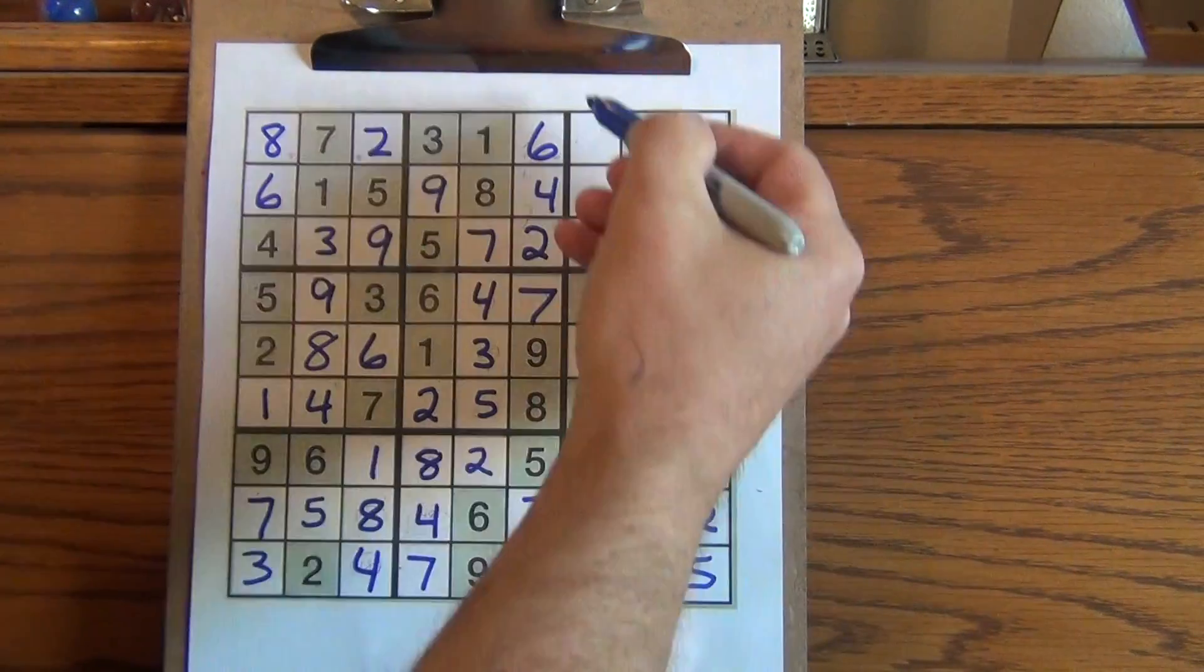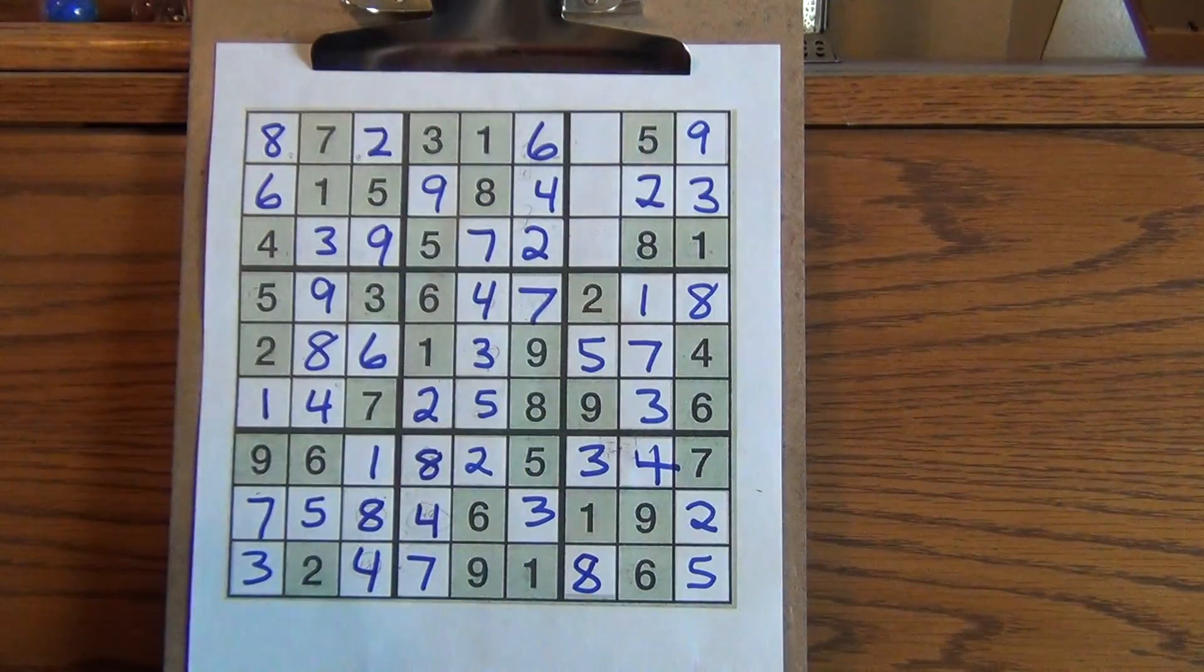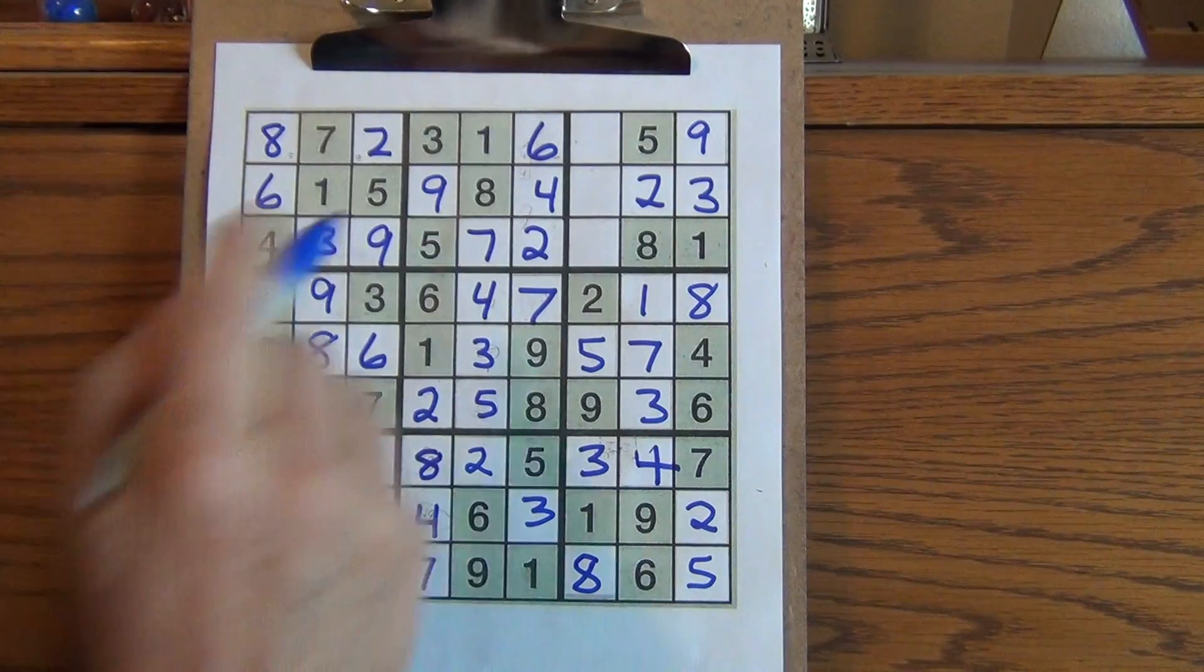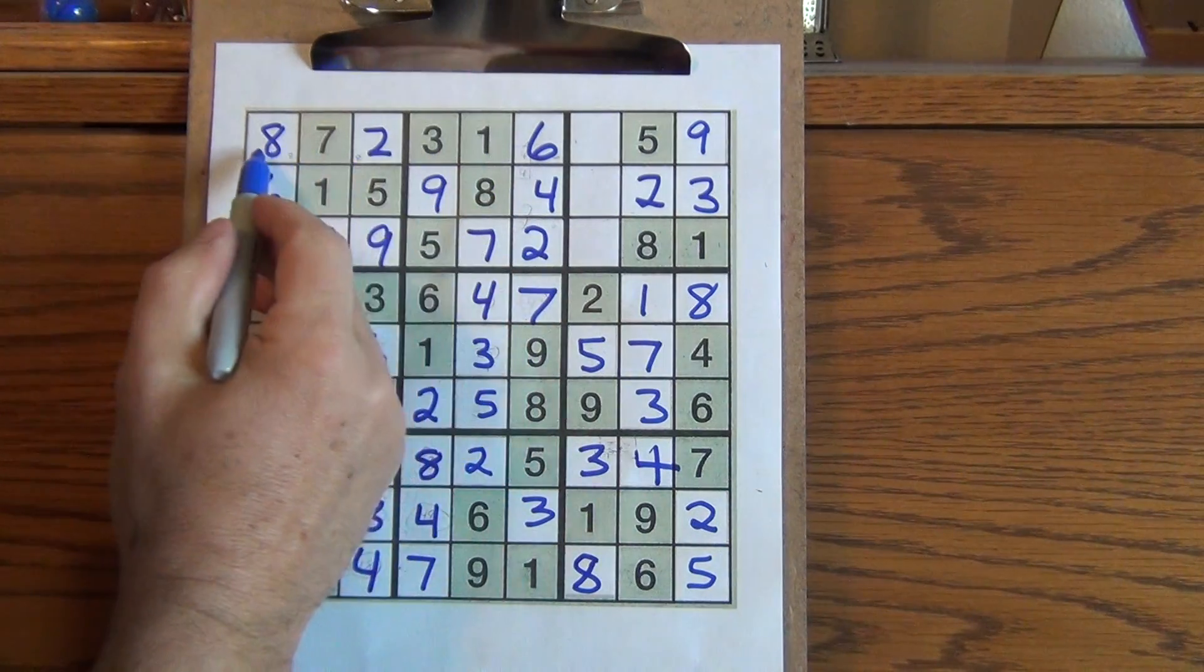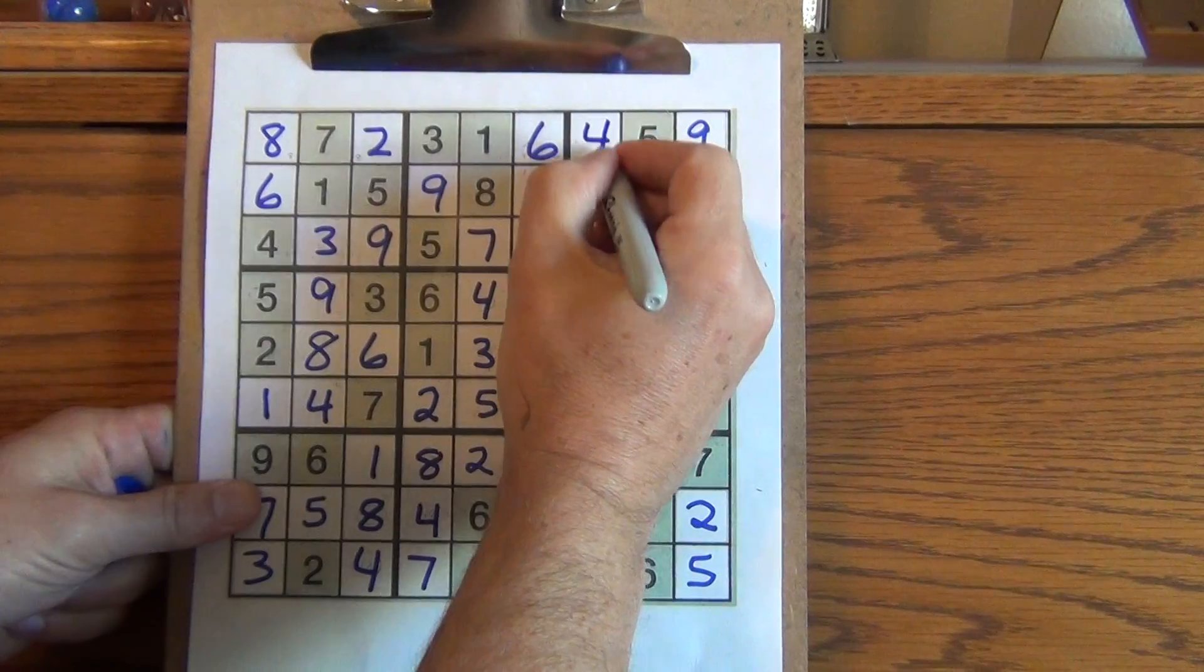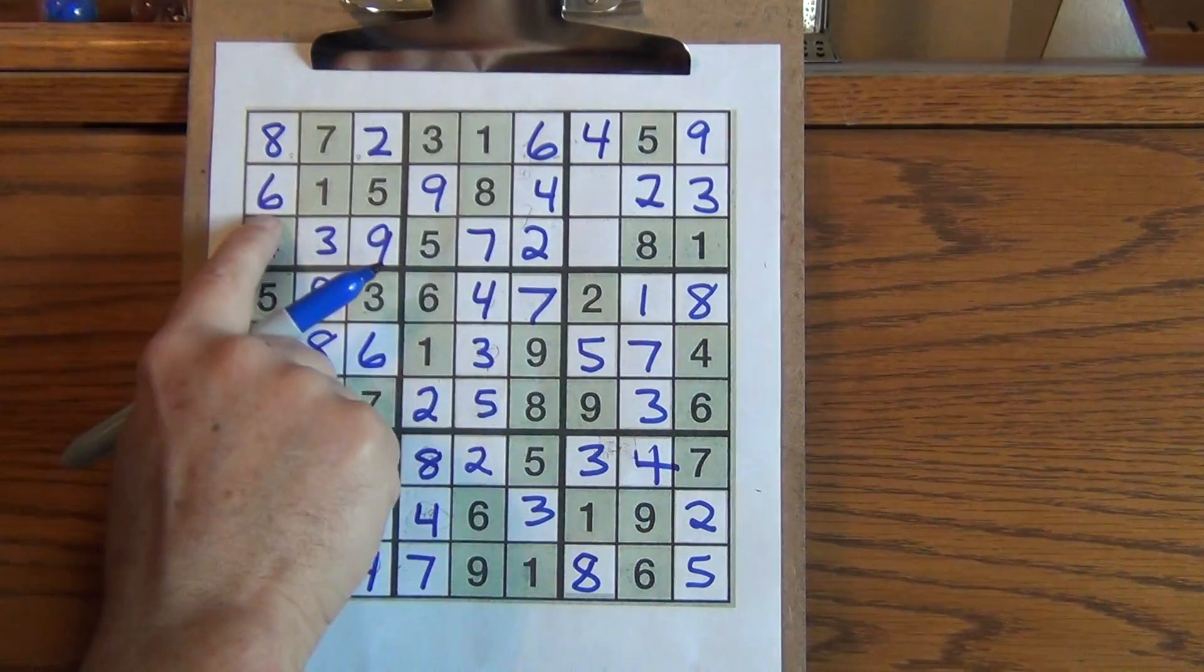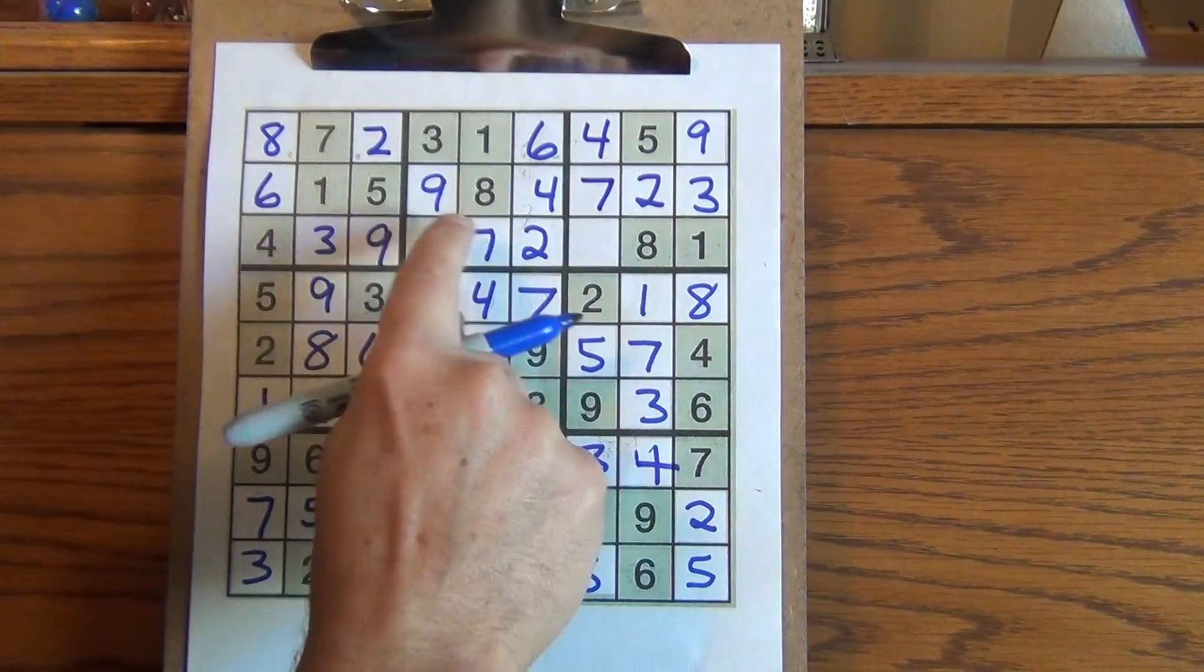I need to get these three. I could work up and down this way, but because there's only one missing in each of these rows, I just know one, two, three. There's no four, no four. This has to be a four. One, two, three, four, five, six. This must be a seven, eight, nine.